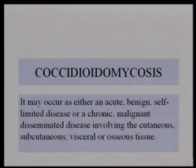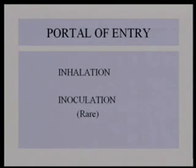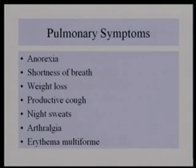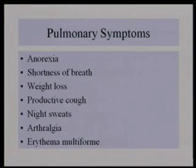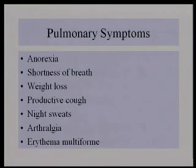Cutaneous lesions can occur, with inoculation occurring primarily by inhalation, like the others, or through lab accidents and other types of inoculation. The symptoms are very similar to TB symptoms, but the distinguishing features are the arthralgia and the erythema multiforme — patients get this red rash, usually on the legs, and for some reason females get that more than males. Joint pains are frequent.